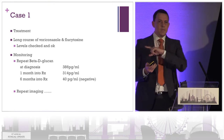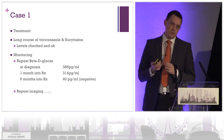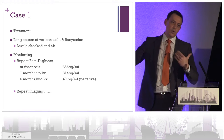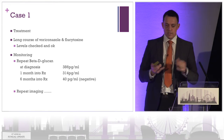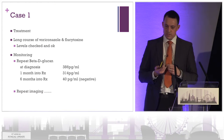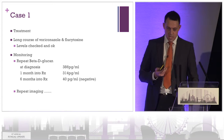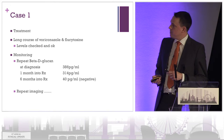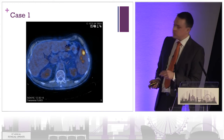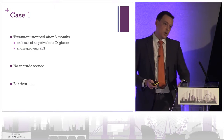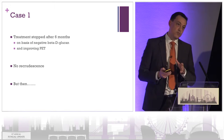Why did we choose voriconazole and flucytosine? The only oral agents we had to treat him were voriconazole and flucytosine. We thought long and hard about whether to put him through a long course of OPAT or give him high-dose voriconazole and see how he went. We monitored things very closely, checked his levels — voriconazole was therapeutic. Over time he continued to improve, his fever settled, and at about four months into treatment most of the spots in his liver had disappeared, with a couple remaining in his spleen.